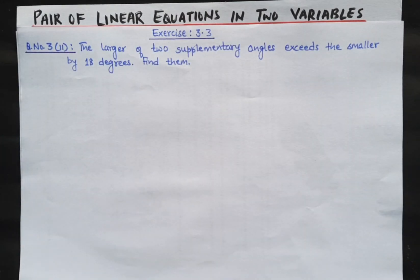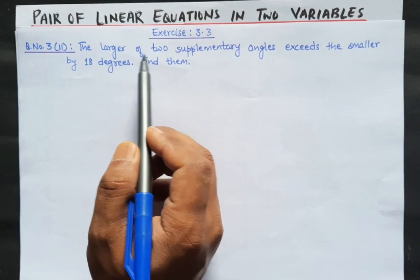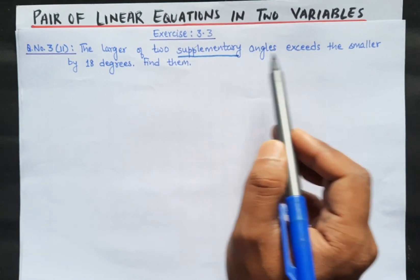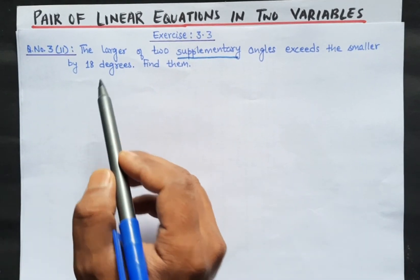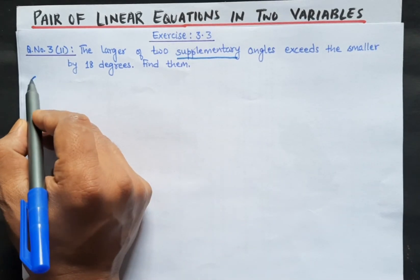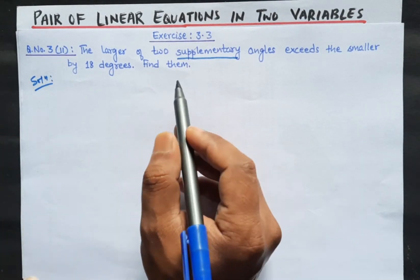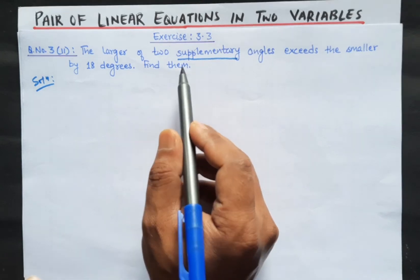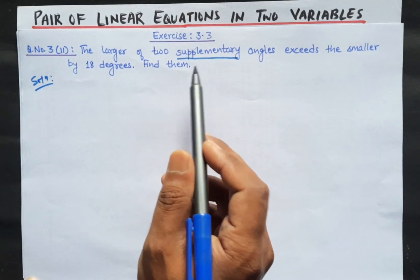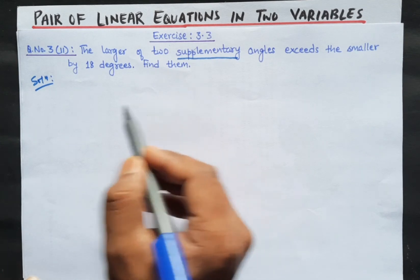Now let's do question number 2. The larger of two supplementary angles exceeds the smaller by 18 degrees. Find them. So here we have supplementary angles, and supplementary angles are two angles whose sum is 180 degrees. We have to find those two angles.